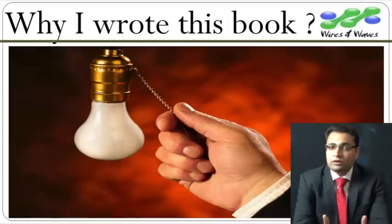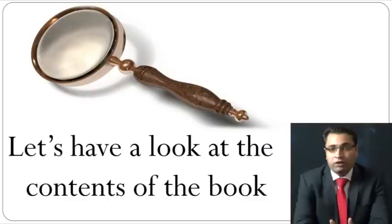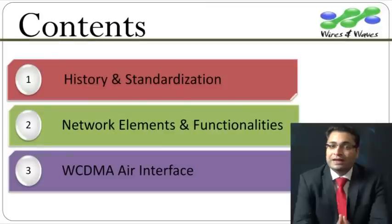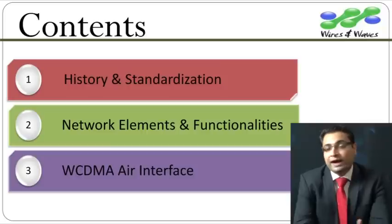Let's have a look at the contents of the book. The book is divided into 10 modules, one for each day. In the first module we will discuss the history of mobile communication and follow the evolutionary path of 2G, 2.5G, 3G and the systems beyond 3G.